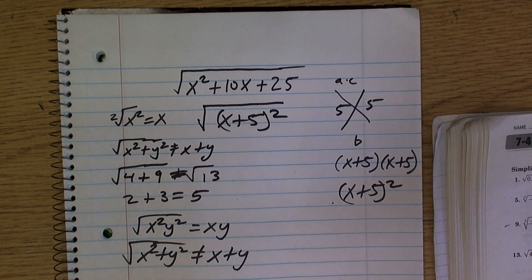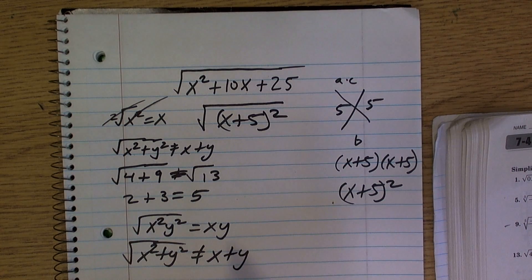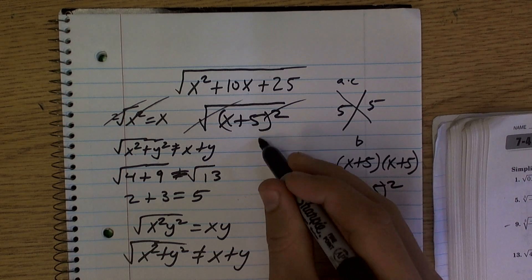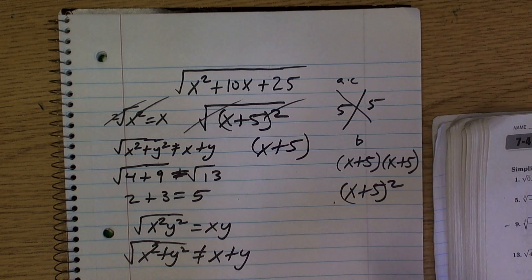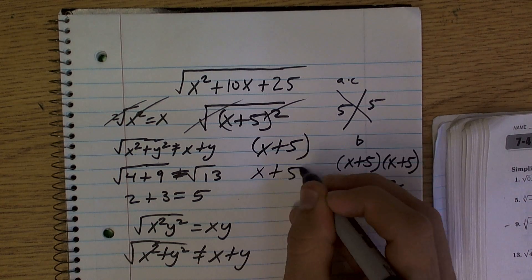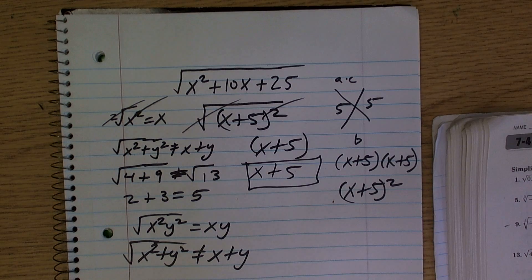That works. So now, that's cool though, because look, those cancel out, right? Those cancel out. So it equals just x plus 5. Cool. All right. Makes sense.